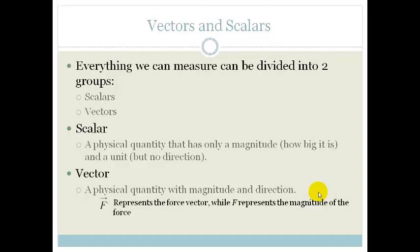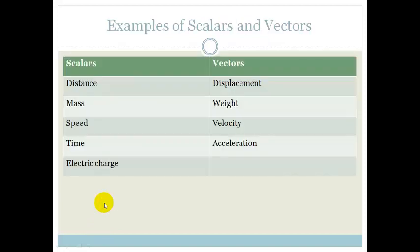We can basically indicate a vector by representing it with a force. For example, a force vector would be F, but we represent the vector with a little arrow above it to show that it is a vector.